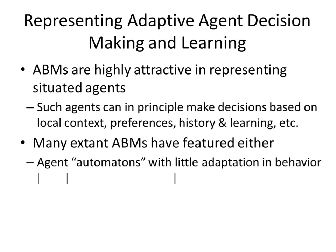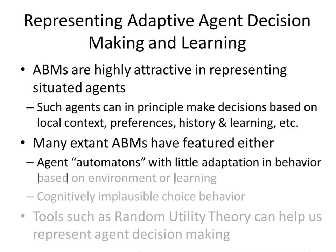The good news is that particularly individual-based models — agent-based models — are highly attractive at representing individuals in certain situated circumstances with certain preferences. They can be associated with preferences, with history of exposure to actual choices and their learning from that exposure. And yet, traditionally, most agent-based models have featured almost automaton-like agents that just decide things probabilistically in a way that's totally cognitively implausible.